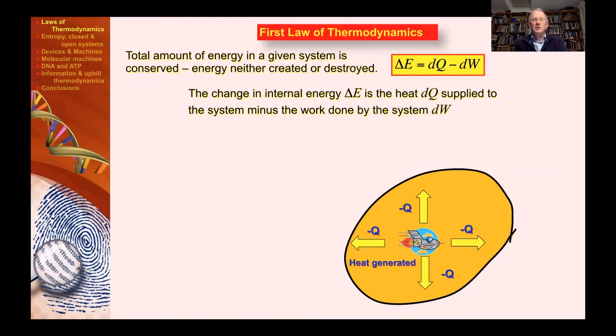The convention is that we talk about DQ being the heat supplied to the system. So if the system itself is doing work, it's going to be minus DW. The change in internal energy is the heat supplied to the system minus the work done by the system. If there's no heat being exchanged, then the change in internal energy is simply the work done by the system.